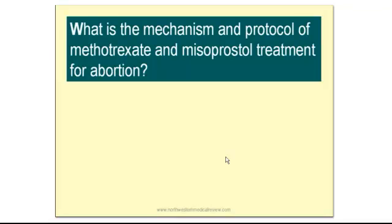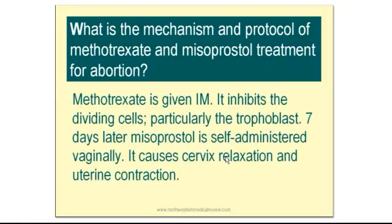What is the mechanism and protocol of methotrexate and misoprostol treatment for abortion? Up until 2005, the methotrexate and misoprostol combination was very popular for abortion. T-Rex was injected into the buttocks on day one, and then on day seven, the patient inserted misoprostol tablets vaginally. Methotrexate stops cell division, inhibits and loosens the trophoblast, and kills the fetus. Misoprostol causes cervical dilation and uterine contraction.